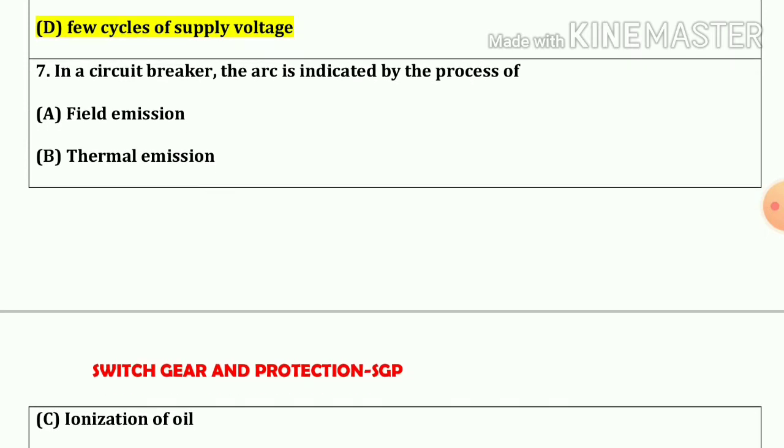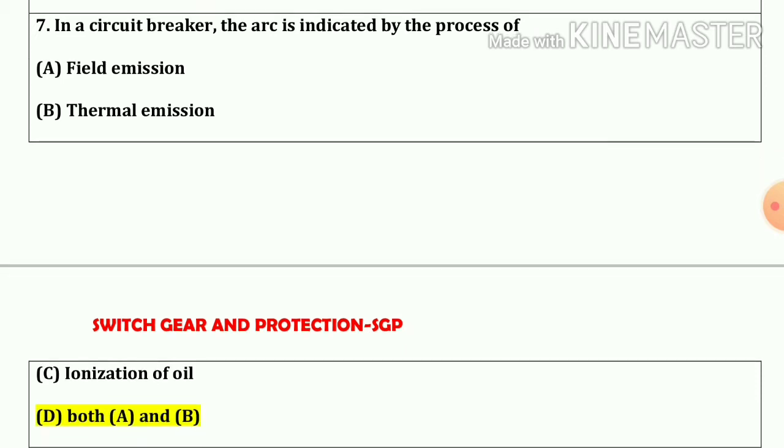Question number 7. In a circuit breaker the arc is indicated by the process of both A and B, that means field emission and thermal emission.